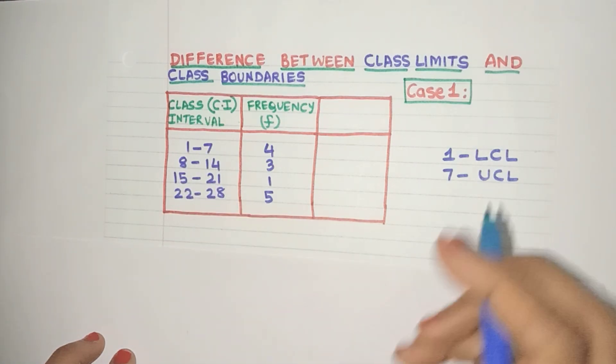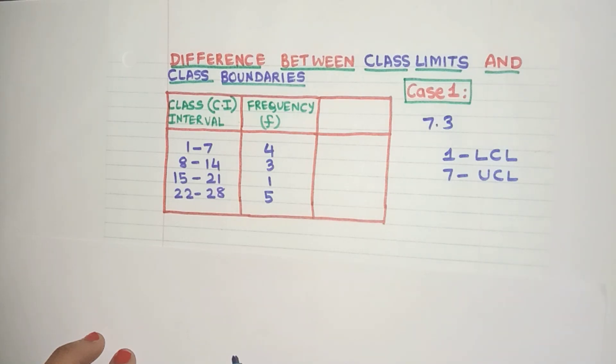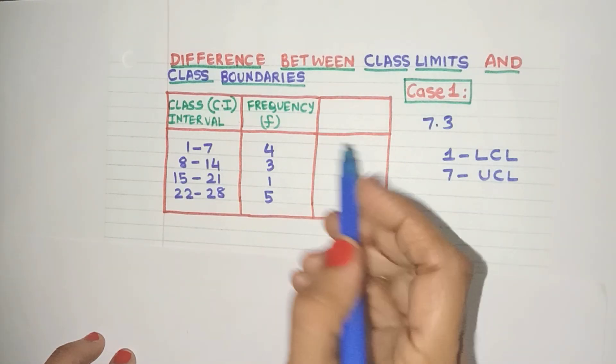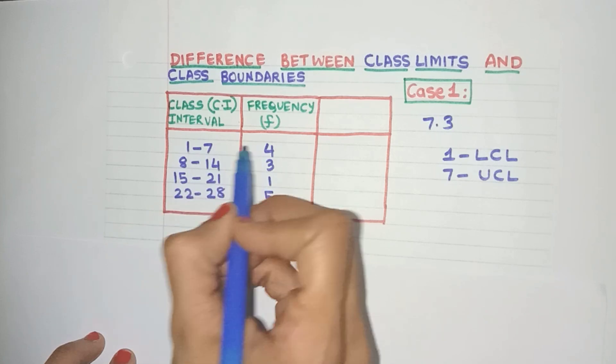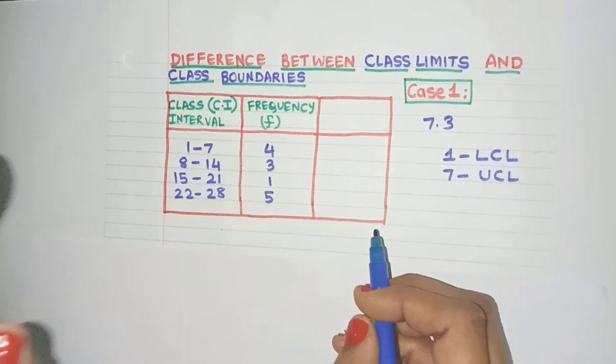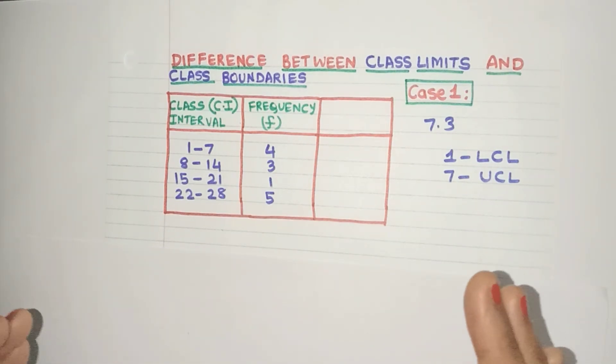Now suppose I have continuous data. Say suppose I want to add this observation 7.3. Now the confusion is in which class interval should I add it? Should I add it here 1 to 7 or in 8 to 14? Also with these class intervals, we cannot draw histograms for the data nor can we calculate the median or mode. So to overcome these problems, the concept of class boundaries is very useful and it's very easy to calculate.